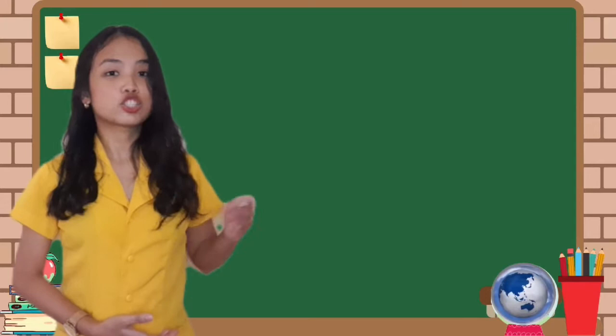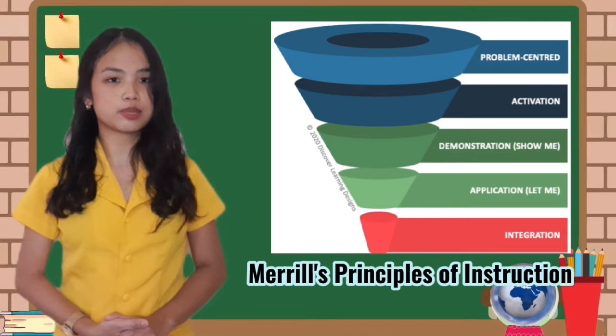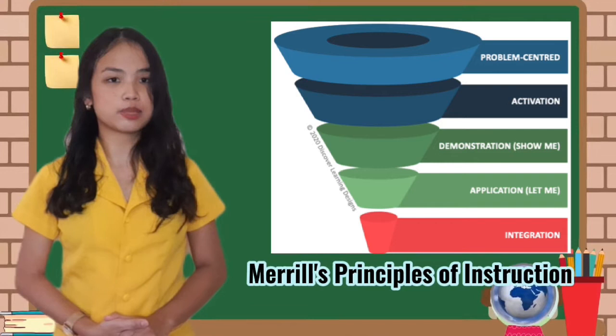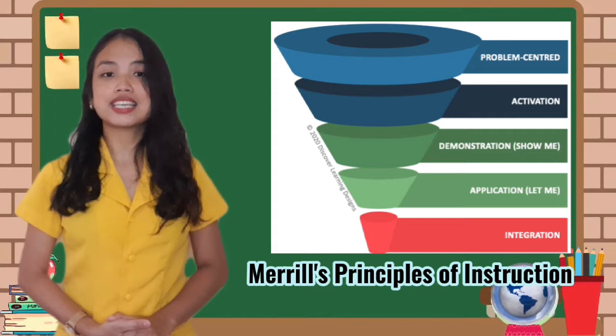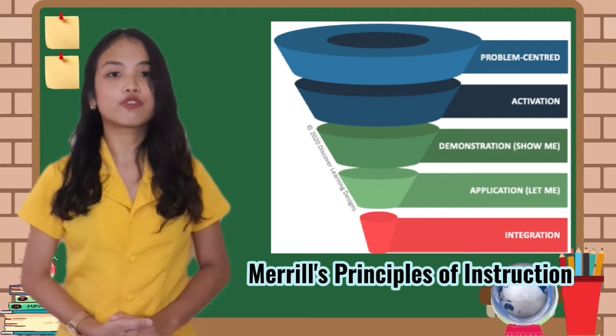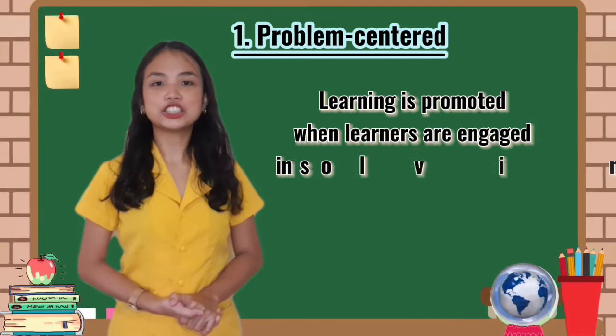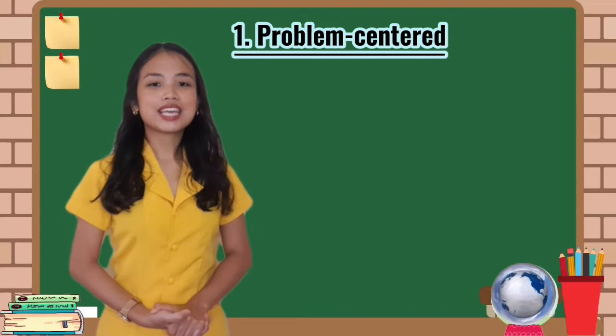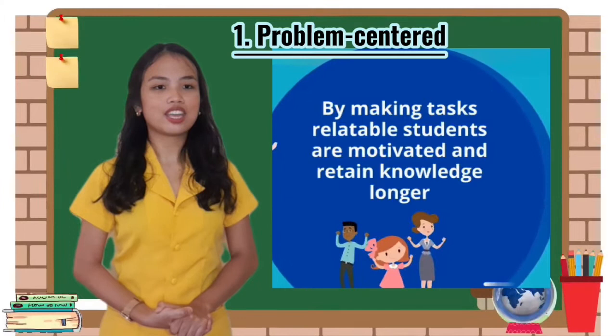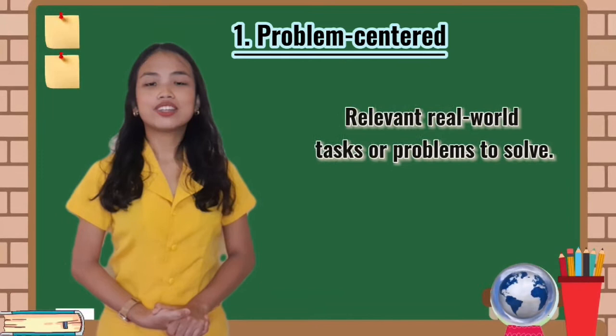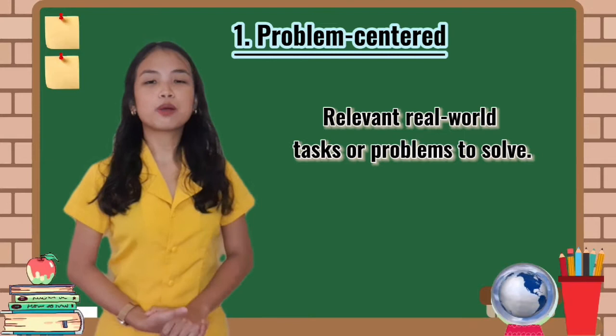Shown in this figure is another illustration of Merrill's Principles of Instruction in an inverted triangle, which basically means that the process starts with a bigger path following five steps. The first principle is problem-centered. Learning is promoted when learners are engaged in solving real-world problems. By making tasks relatable, students are motivated and retain knowledge longer.